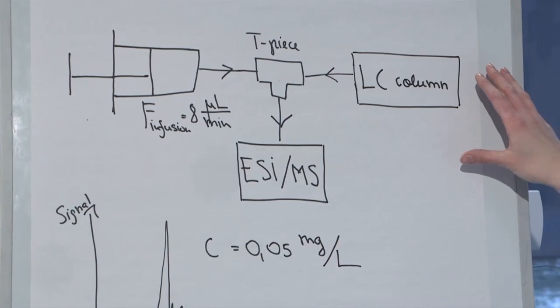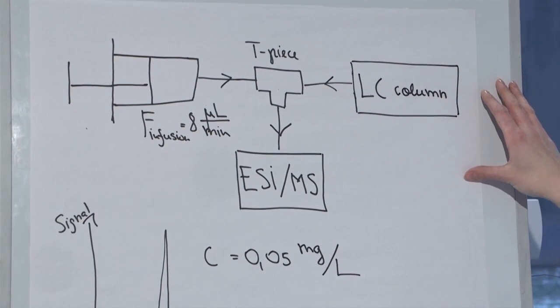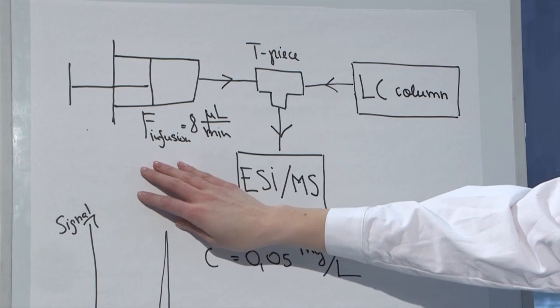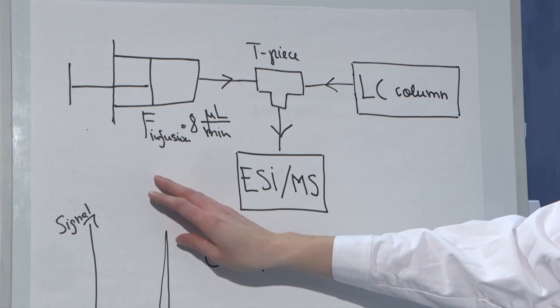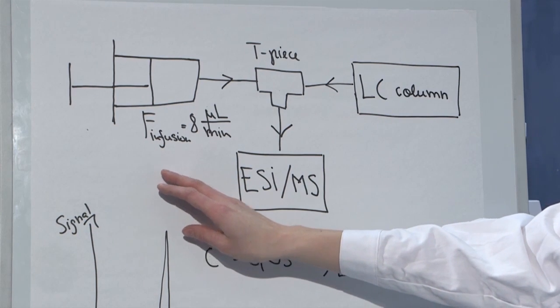To do this we need two things. First we need the samples that we are going to inject from the LC part, and we need the solution that we are going to infuse with the infusion pump.